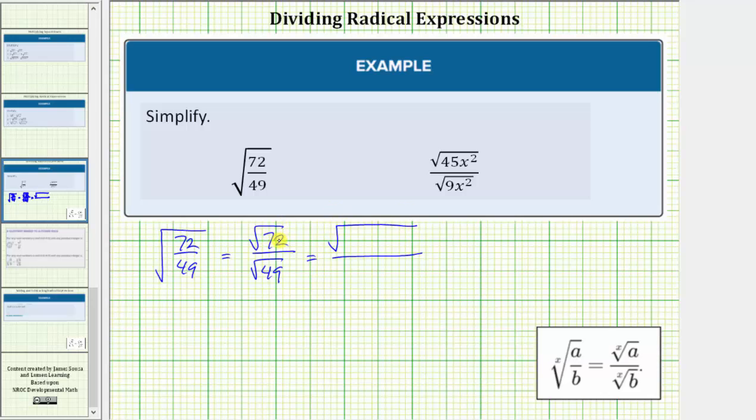72 is equal to eight times nine. Eight is equal to three factors of two, and nine is equal to two factors of three. So here's the prime factorization of 72, and 49 is a perfect square. It's equal to seven times seven.